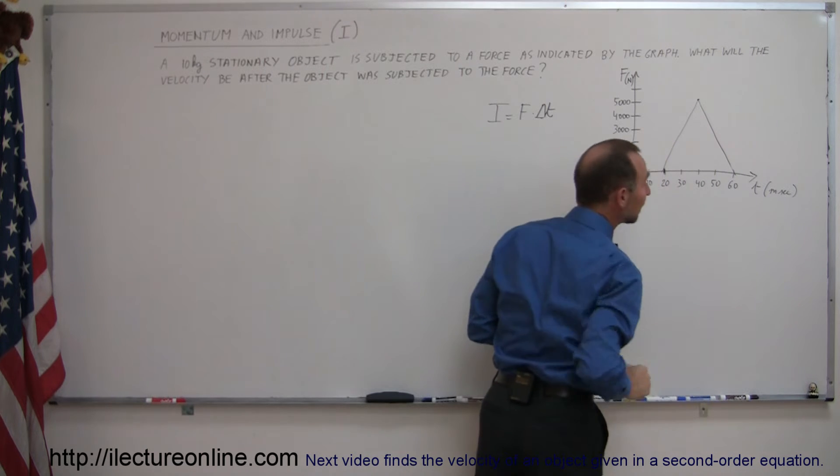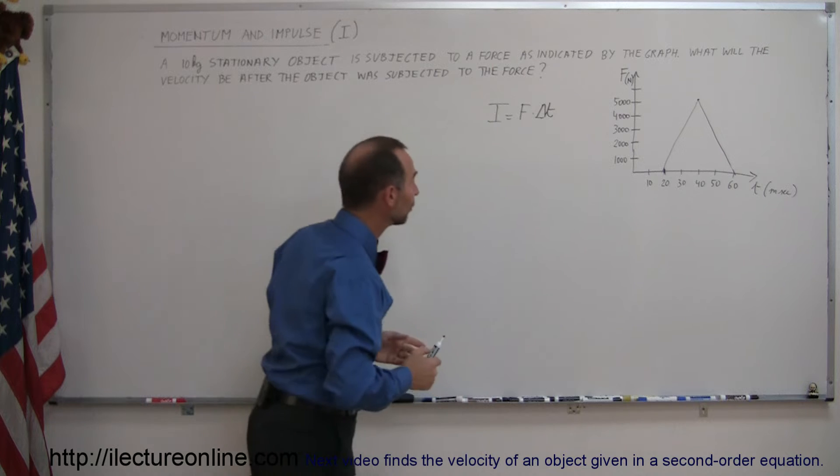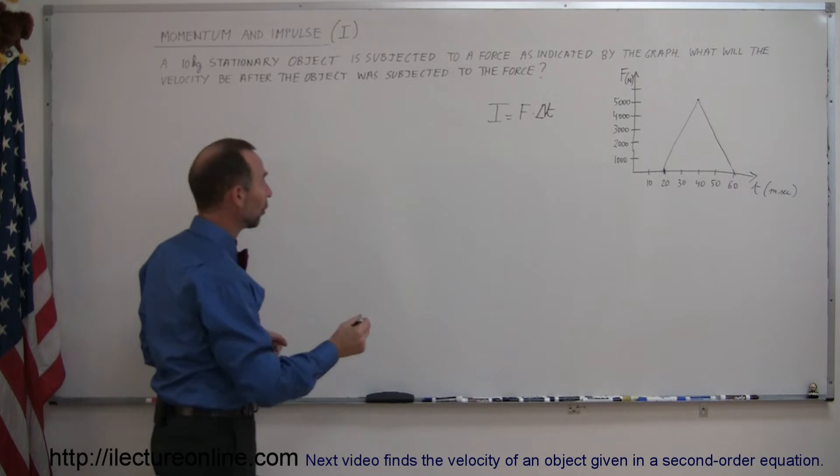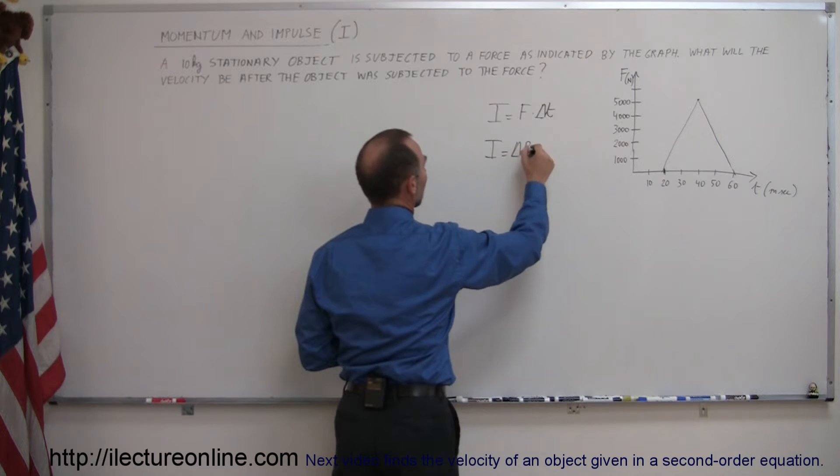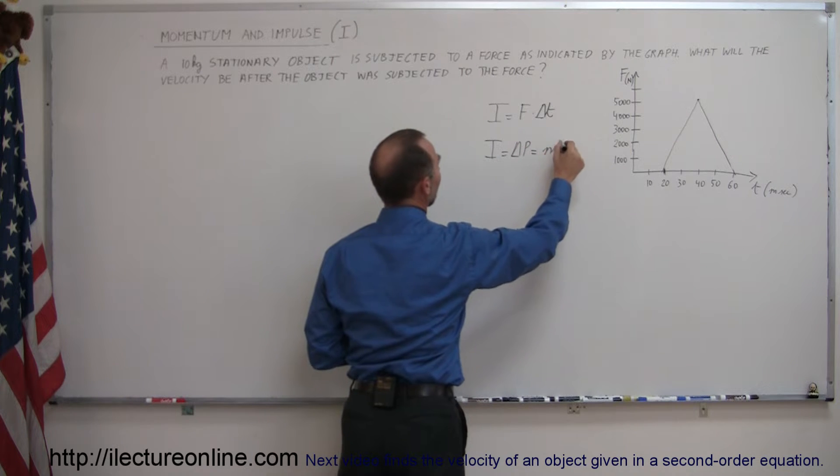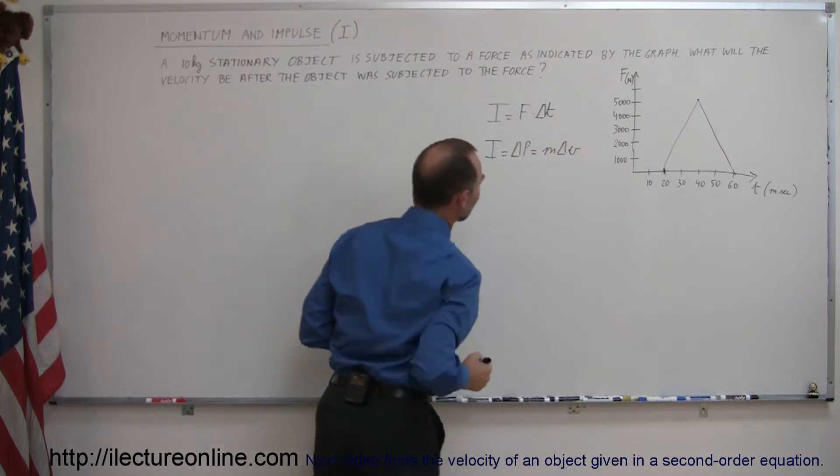So if we figure out the area underneath this curve we can figure out the impulse and we can then say impulse also means change of momentum which is equal to m times the change in the velocity.